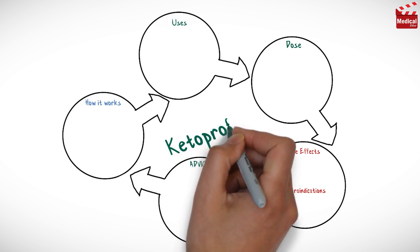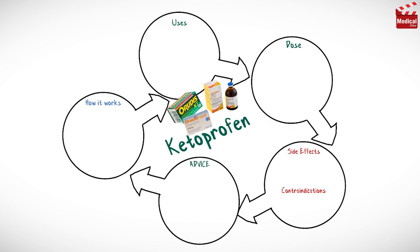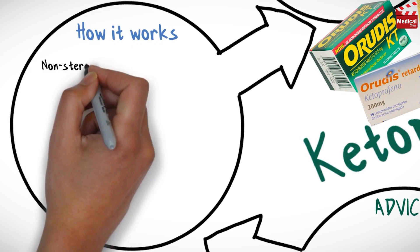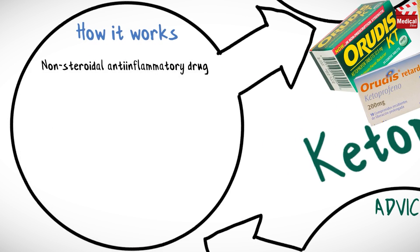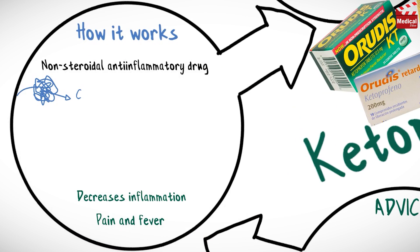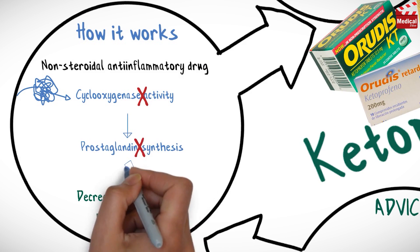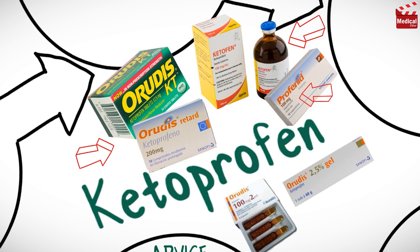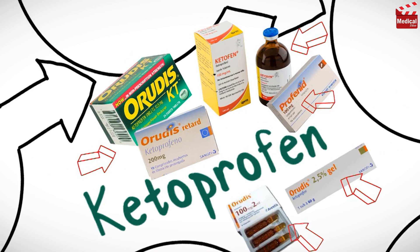In this video we'll briefly discuss what ketoprofen is and how it works, what it's used for, the dose, side effects, and contraindications and precautions. Ketoprofen is a non-steroidal anti-inflammatory medication. It decreases inflammation, pain, and fever through inhibition of cyclooxygenase activity and prostaglandin synthesis. It is available as tablets, syrup, suppositories, injection, and gel for topical application.